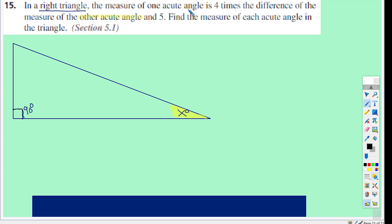The measure of one acute angle is four times the difference. So let's ignore this part just for a moment. The measure of one acute angle, so that's going to be this angle right here, is four times greater than this thing and five.